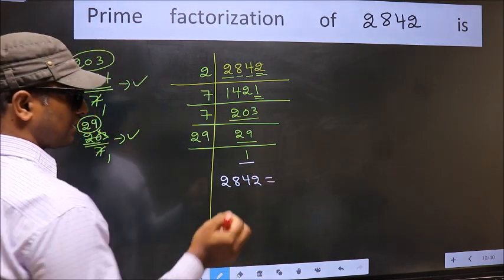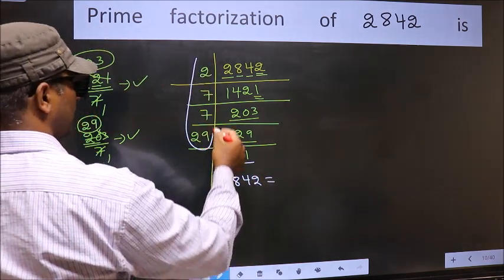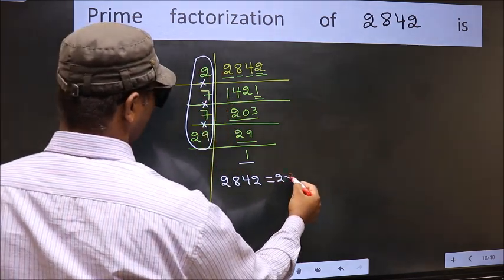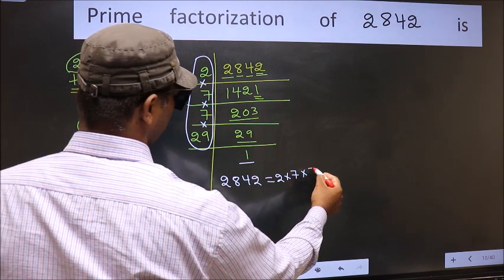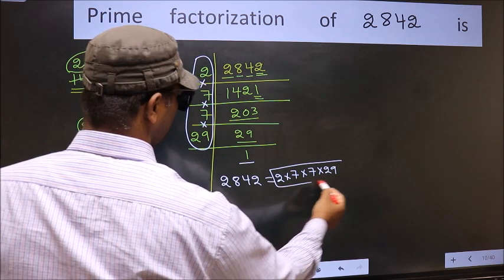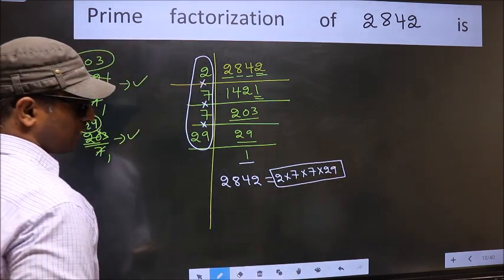...is the product of these numbers. That is 2 into 7 into 7 into 29. This is the prime factorization of 2842.